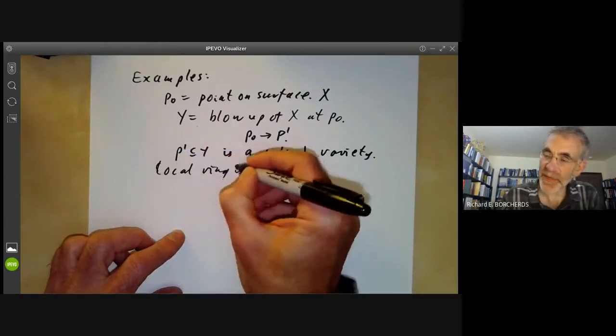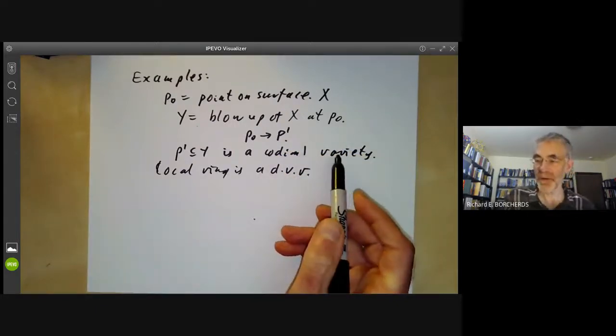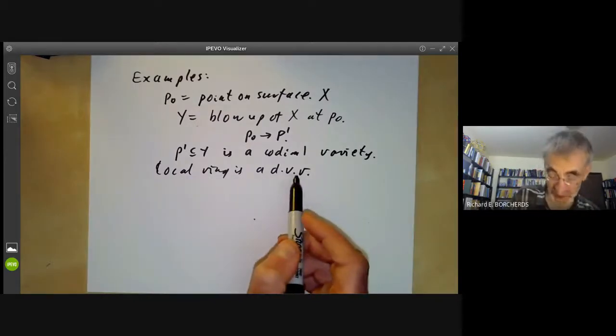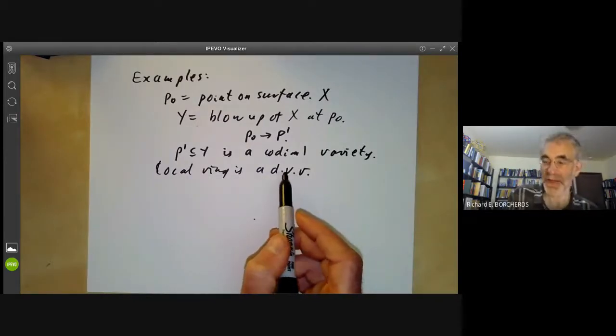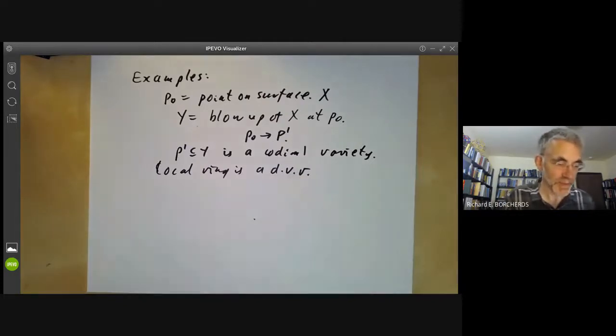So its local ring is a discrete valuation ring. Because if you take any codimension one variety in some variety, the local ring at that point is a discrete valuation ring. And in fact, that's a common way to produce discrete valuation rings. Well, this isn't an example of a non-discrete valuation ring yet. So let's continue.